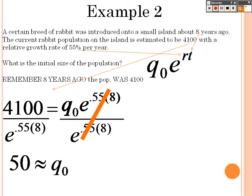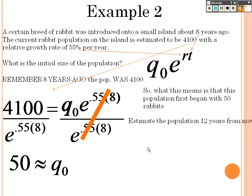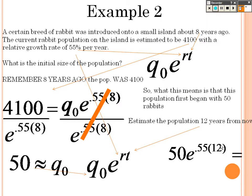The reason why I rounded up to 50 is because you can't have a fraction of a rabbit. So what it means is that the population first began with 50 rabbits. Now we're supposed to estimate the population 12 years from now. If that's what it started with, now that I know what it started with, I can plug everything in with a 12. And 12 years from now, the population of rabbits would be in the millions: 2,993,707.